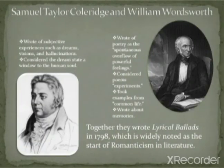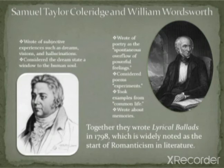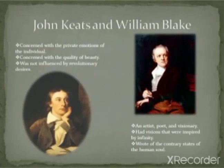Coleridge and Wordsworth together published 'Lyrical Ballads' in 1798, which is considered the manifesto of Romanticism in literature. Wordsworth wrote that poetry is 'a spontaneous overflow of powerful feelings — emotions recollected in tranquility.' Coleridge wrote of subjective experiences such as dreams, visions, and hallucinations; he considered the dream state as a window to the human soul. Keats was preoccupied with the private emotions of the individual and with the quality of beauty; he was not influenced by revolutionary ideas like Wordsworth and Shelley.